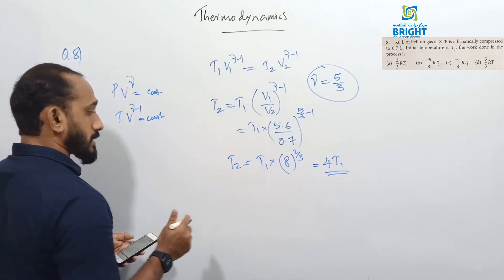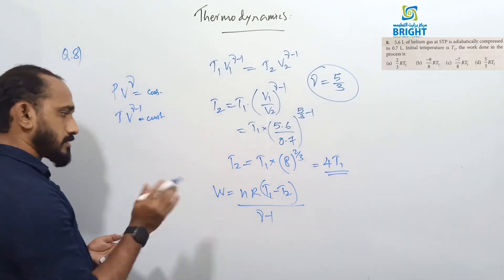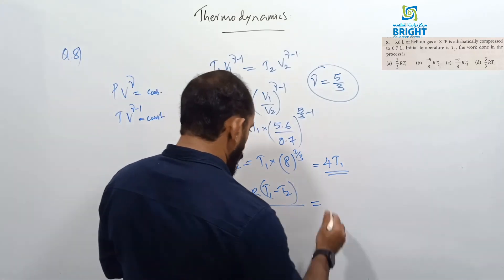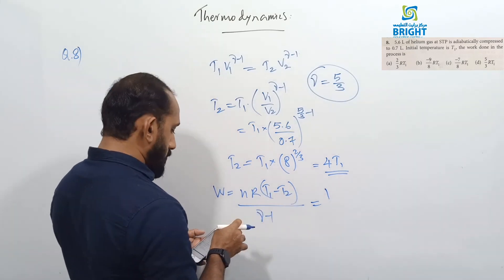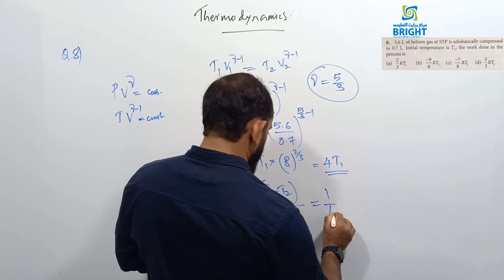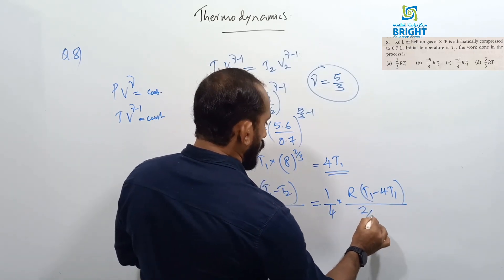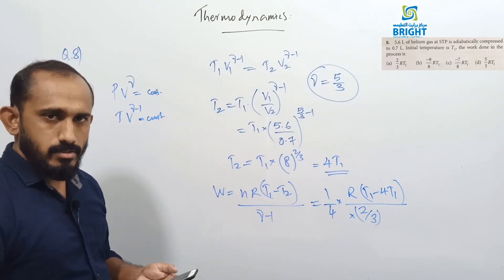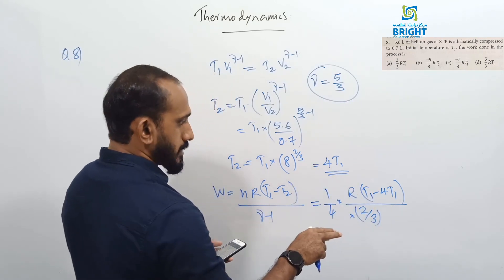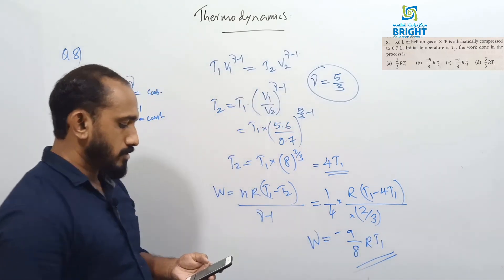Now, work done in adiabatic process: W = nR(T1 − T2)/(γ − 1). With n = 0.25 moles, T2 = 4T1, and γ − 1 = 2/3: W = (1/4) × R × (T1 − 4T1)/(2/3) = (1/4) × R × (−3T1) × (3/2) = −9RT1/8. So option B is correct — the work done is −9RT1/8.